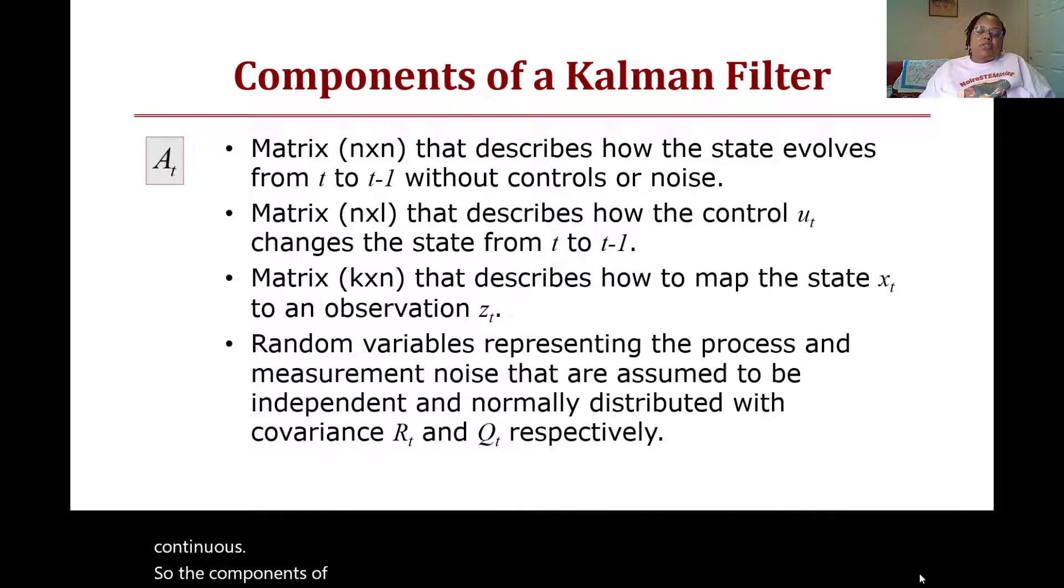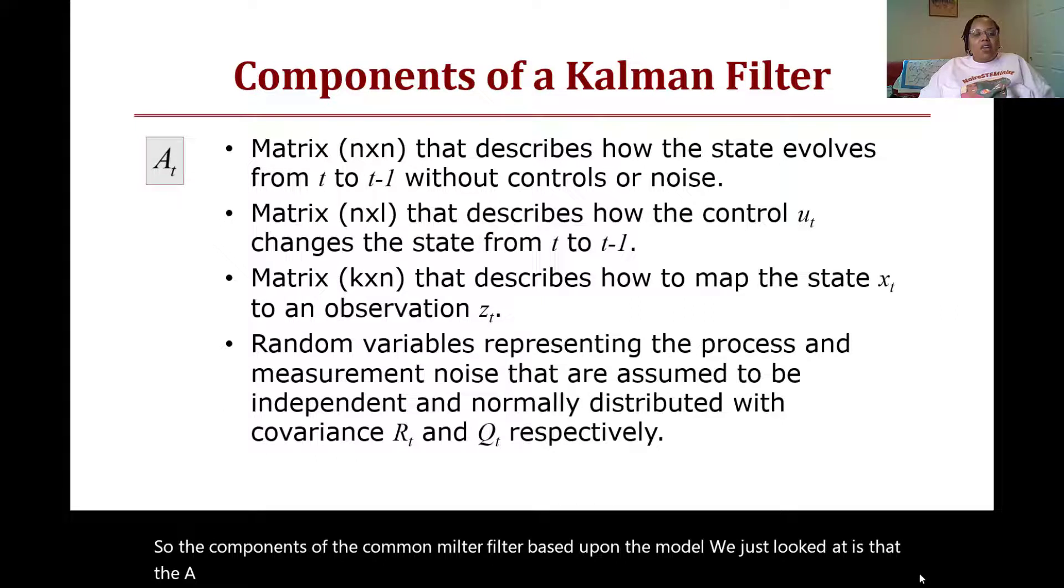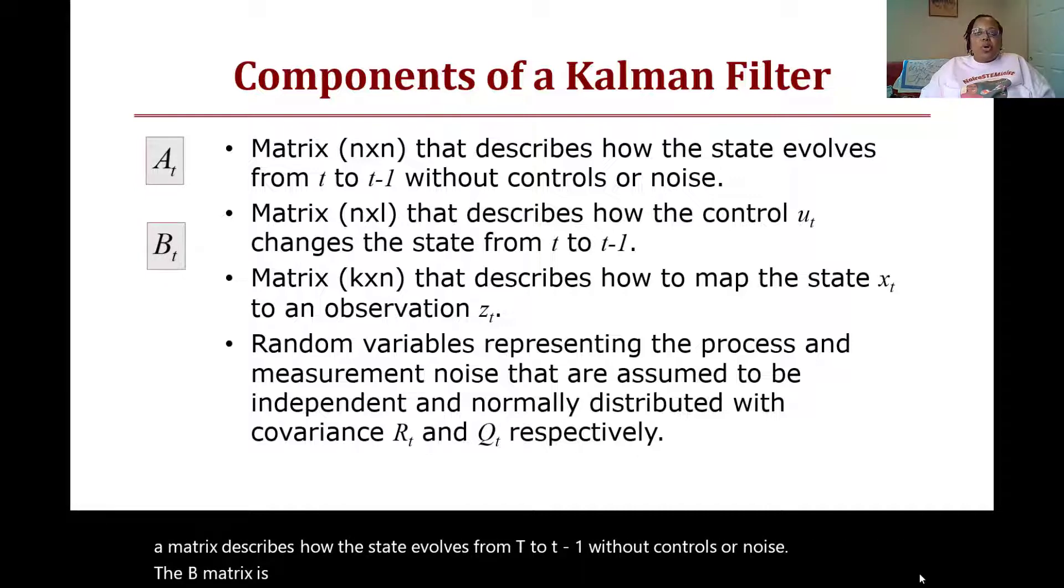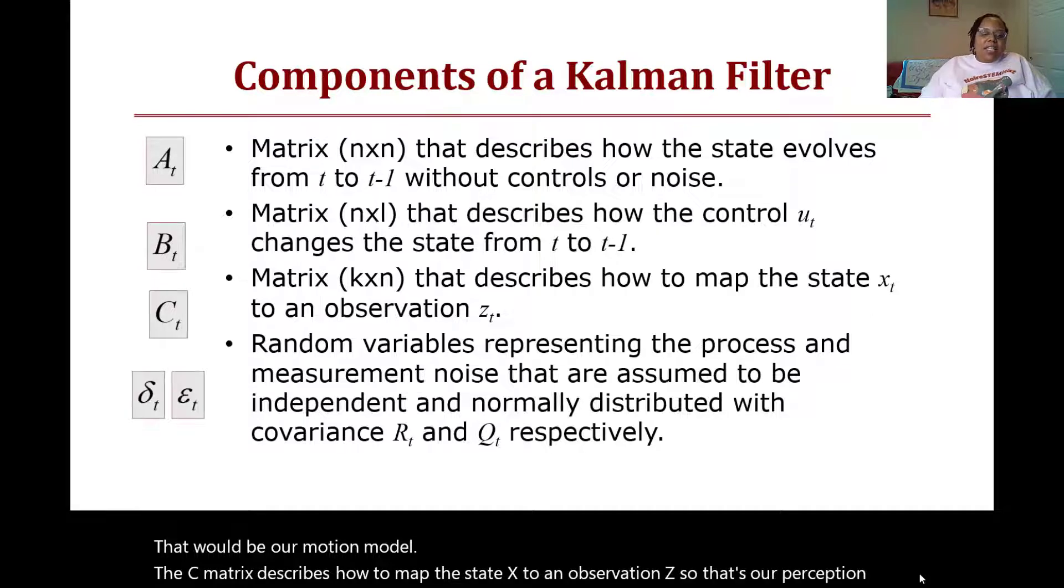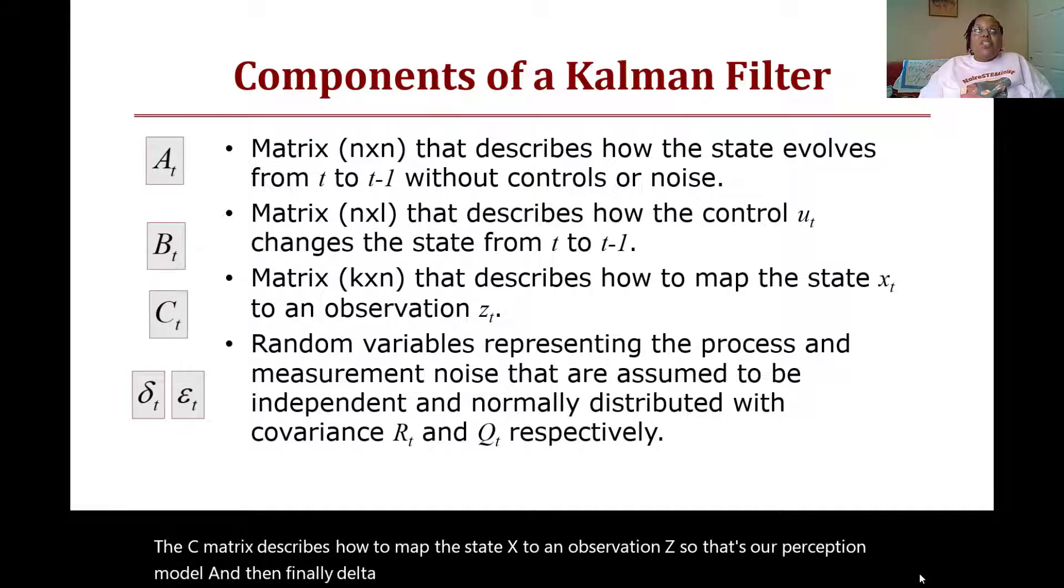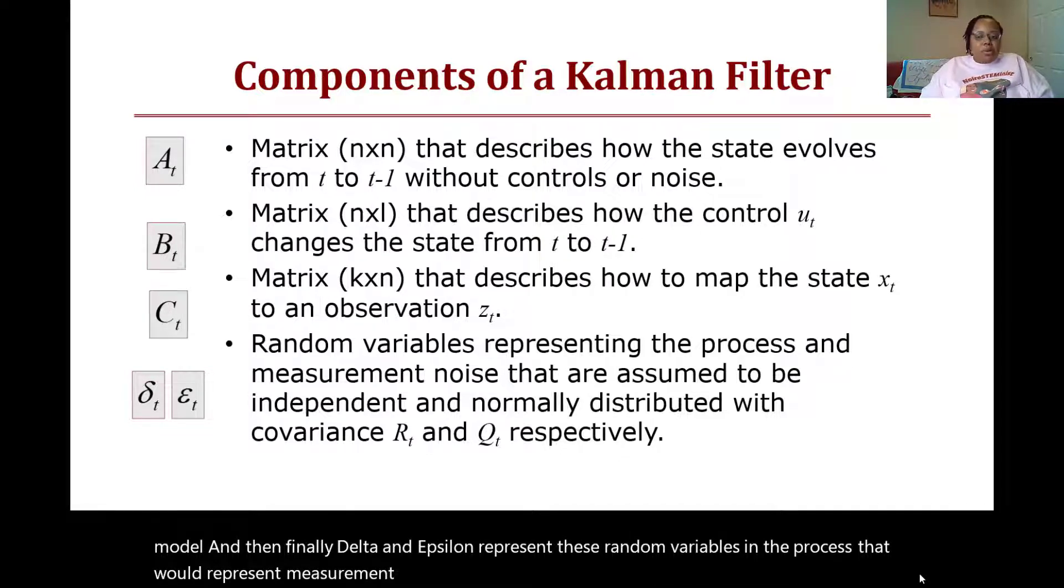The components of the Kalman filter based upon the model we just looked at: the A matrix describes how the state evolves from t to t minus one without controls or noise. The B matrix is n by one and describes how the control input changes the state from t to t minus one - that would be our motion model. The C matrix describes how to map the state x to an observation z - that's our perception model. And then finally, δ and ε represent these random variables in the process that would represent measurement noise or motion noise or motor noise. They're assumed to be independent and normally distributed with some covariance R and Q respectively.